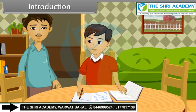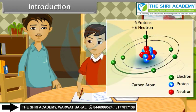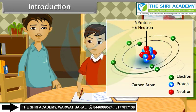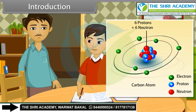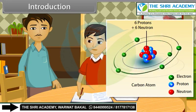Atoms joined together form a molecule. What kind of materials are there in atoms? Atoms consist of electrons, protons and neutrons, and a central core called the nucleus. In this lesson, you will study the structure of the atom.